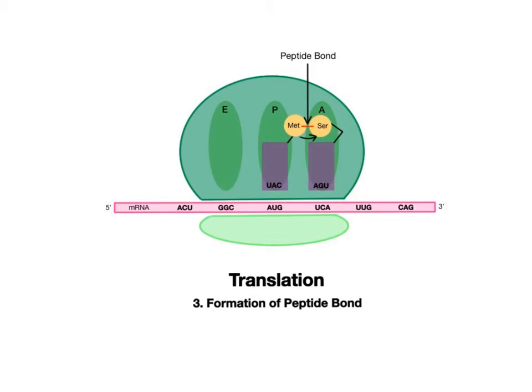In step three, the anticodon of the next incoming transfer RNA temporarily attaches to the messenger RNA codon UCA. The two transfer RNA molecules are positioned close to each other, and the shape of the large ribosomal subunit helps orient their amino acids so they'll make contact and attach to each other through the formation of a peptide bond, a strong carbon to nitrogen covalent bond. This is the early protein composed of two amino acids.